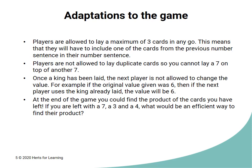At the end of the game you could find the product of the cards that you have left rather than the total. So if you are left with a 7, a 3, and a 4, then you'd have to calculate the product of 7 times 3 times 4. This could lead to discussions about the most efficient order to multiply the numbers in. Is it easier to multiply 21 by 4, or 28 by 3, or perhaps 12 by 7?